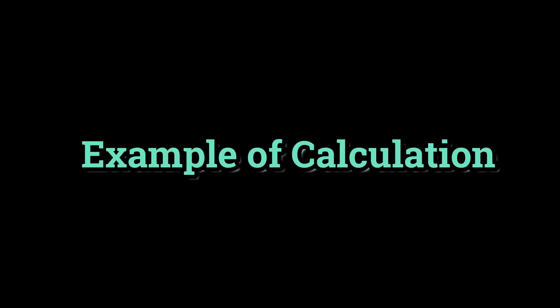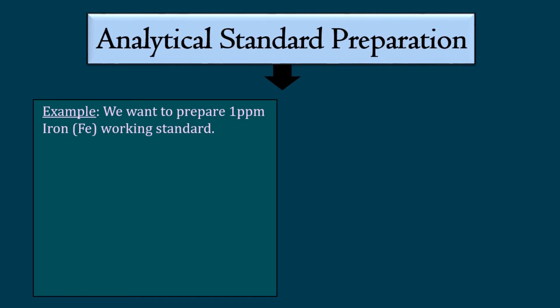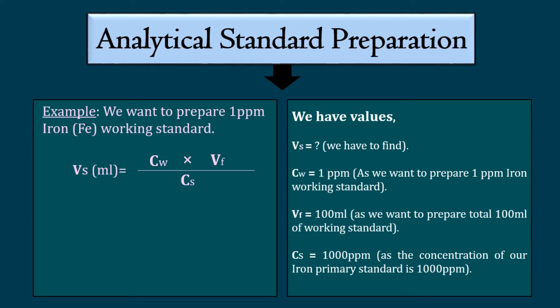For example, assume that we want to prepare 100 ml of 1 ppm iron working standard and we have an iron primary standard of 1000 ppm. We want to know how much primary standard of iron is needed to transfer. That's why Vs is the asking value. We want to prepare 1 ppm iron working standard, so Cw is 1 ppm. We want to prepare 100 ml iron working standard, so Vf is 100 ml. We will use iron primary standard of 1000 ppm, so Cs is 1000 ppm.